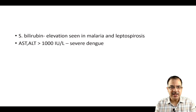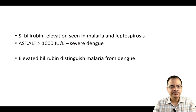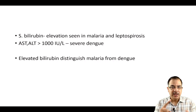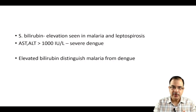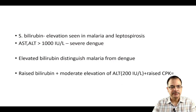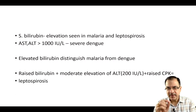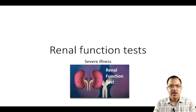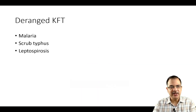Liver enzymes AST and ALT — if more than 1000 international units per liter, this is the defining feature of severe dengue fever. Elevated bilirubin distinguishes malaria from dengue: if bilirubin is high, it favors malaria rather than dengue. A combination of raised bilirubin, moderate ALT elevation around 200, and raised CPK is characteristic of leptospirosis.